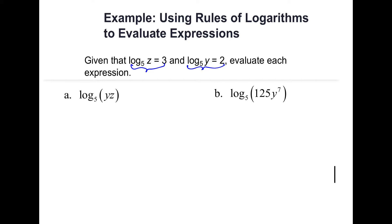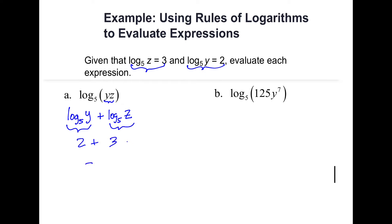To rewrite the first one — it's a product of y and z — so for log base 5 of yz, I can use the product rule: log base 5 of y plus log base 5 of z. We're told that log base 5 of y is 2, and log base 5 of z is 3, so this would simplify down to 5.